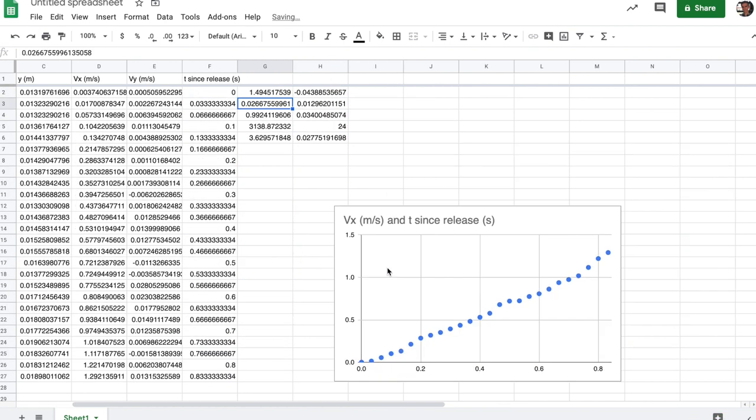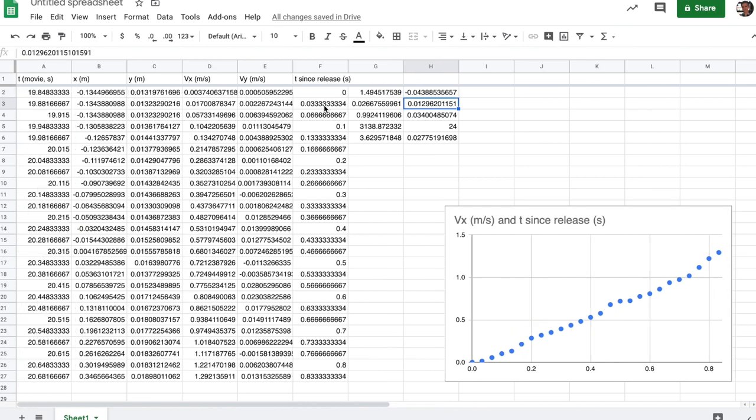And then this tells me that the acceleration that I'm after is going to be 1.49 meters per second squared with an error of 0.02 or 0.03 meters per second squared. The y-intercept is pretty close to zero. It should be about zero for measuring the time since release. But these are good data and we can go ahead and use these to determine our coefficient of kinetic friction using the equations in the lab manual.